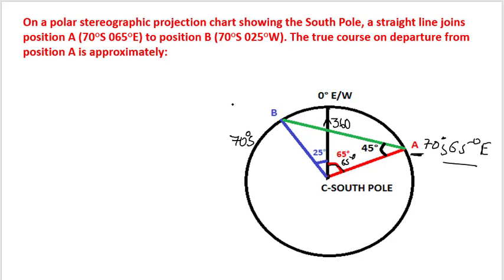Similarly, point B, which is 70 degrees south and 25 degrees west, will subtend a 25 degree angle left of, or west of, the prime meridian.